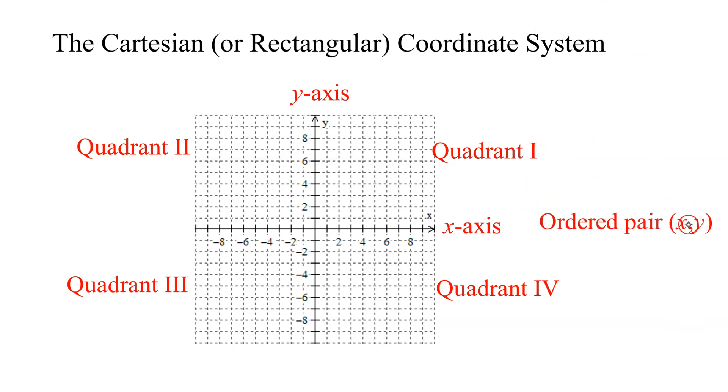Every point in this coordinate system can be uniquely identified by an ordered pair. An ordered pair is written in parentheses. We write the x-coordinate first, then a comma, then the y-coordinate.